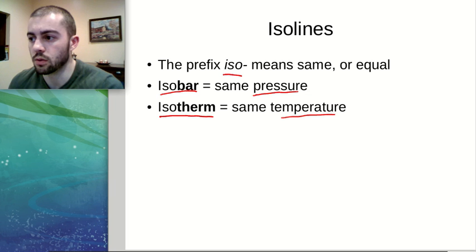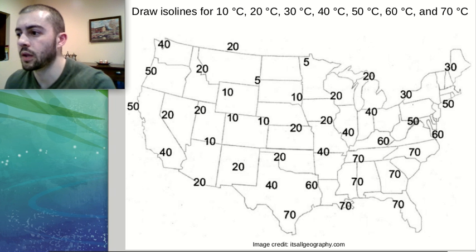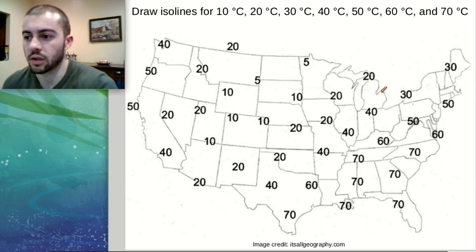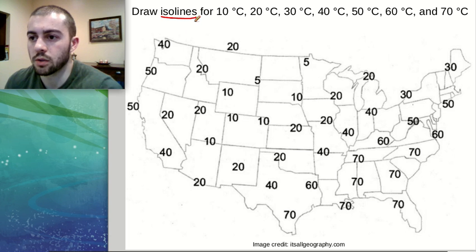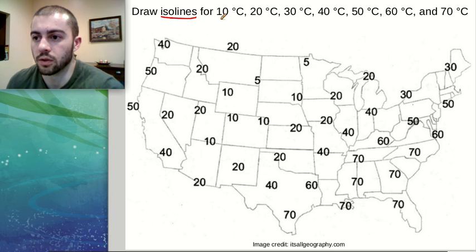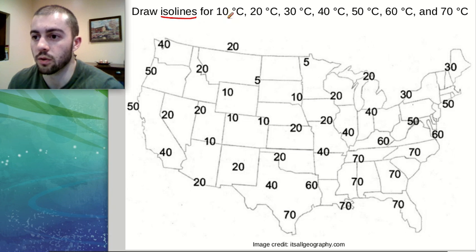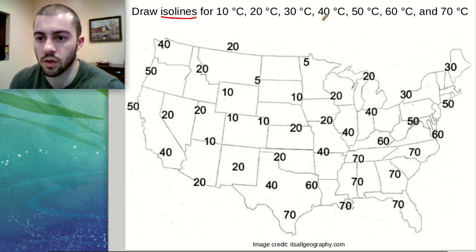Let's look at how to draw these lines. If you look at this map, we have a bunch of different temperatures listed in different areas. With our ISO lines, we want to connect areas that have the same temperature. Usually you'll be given an interval to use when drawing your ISO lines. In this case we've been given a 10-degree interval, going from 10 degrees to 20 to 30 to 40 and so on.